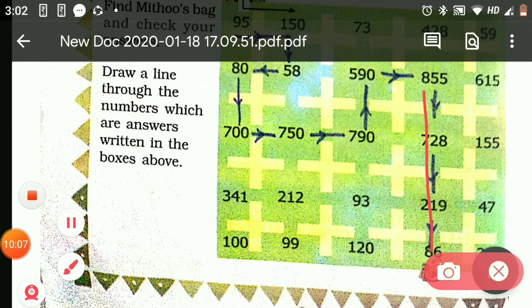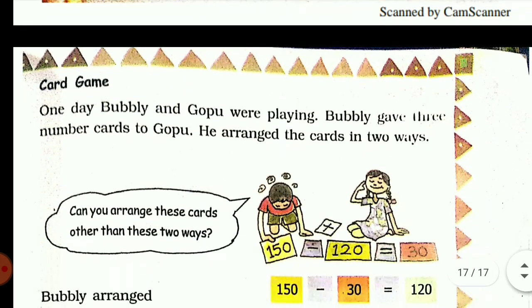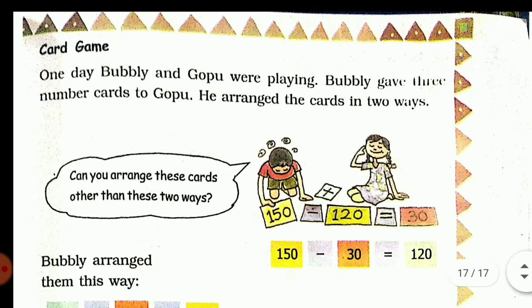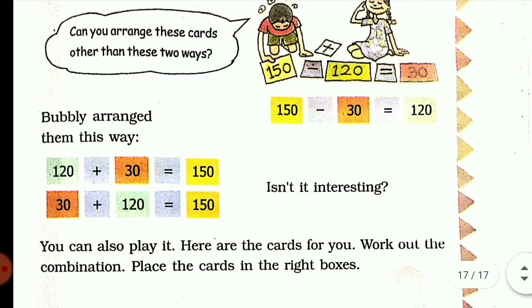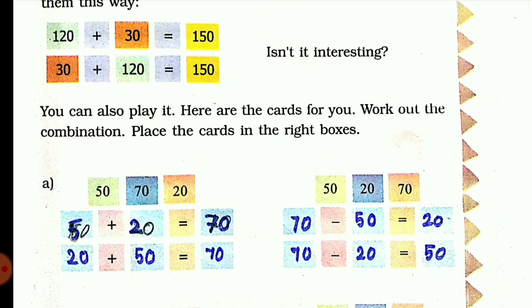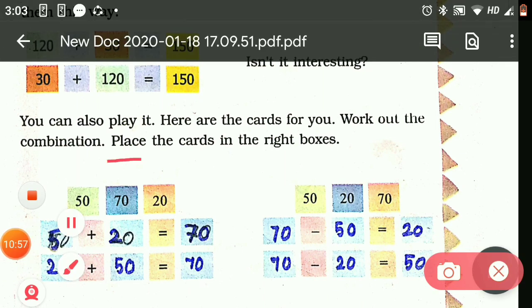Next, Card Game. One day Bubbly and Gopu were playing. Bubbly gave three cards to Gopu, so he arranged the cards in two ways. See, Bubbly is arranging cards. 120 plus 30 is 150. 30 plus 120 is 150. So in whichever order you arrange, you should make the equation correct. Here you can also write as 150 minus 30 is 120, or 150 minus 120 is 30. That way also you can arrange.